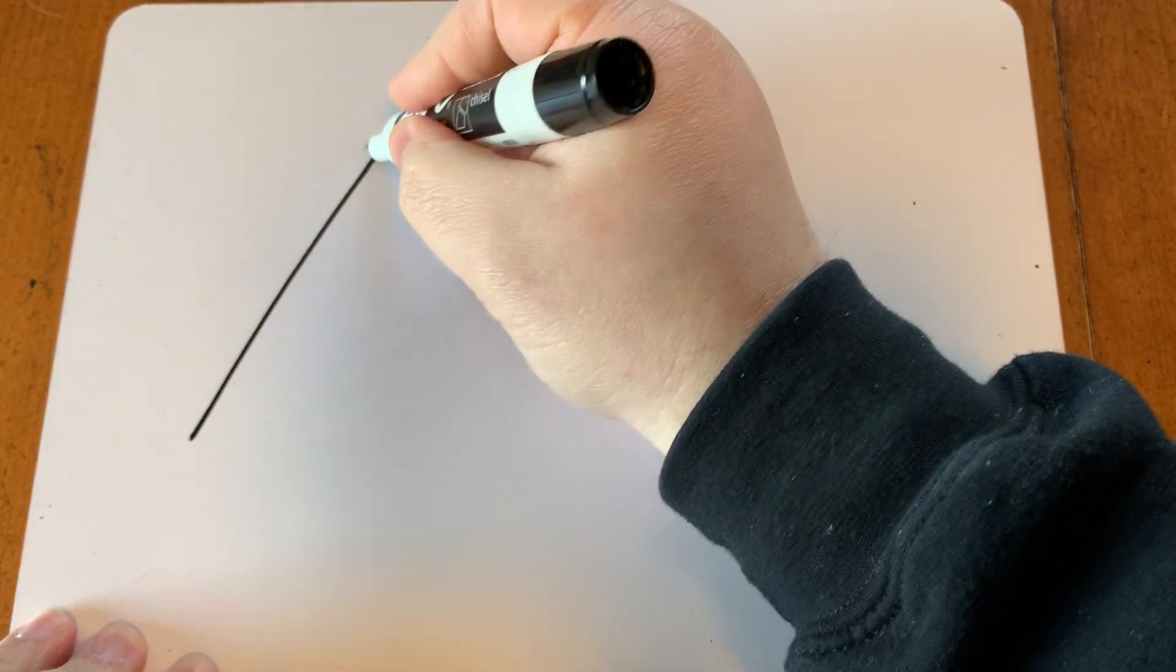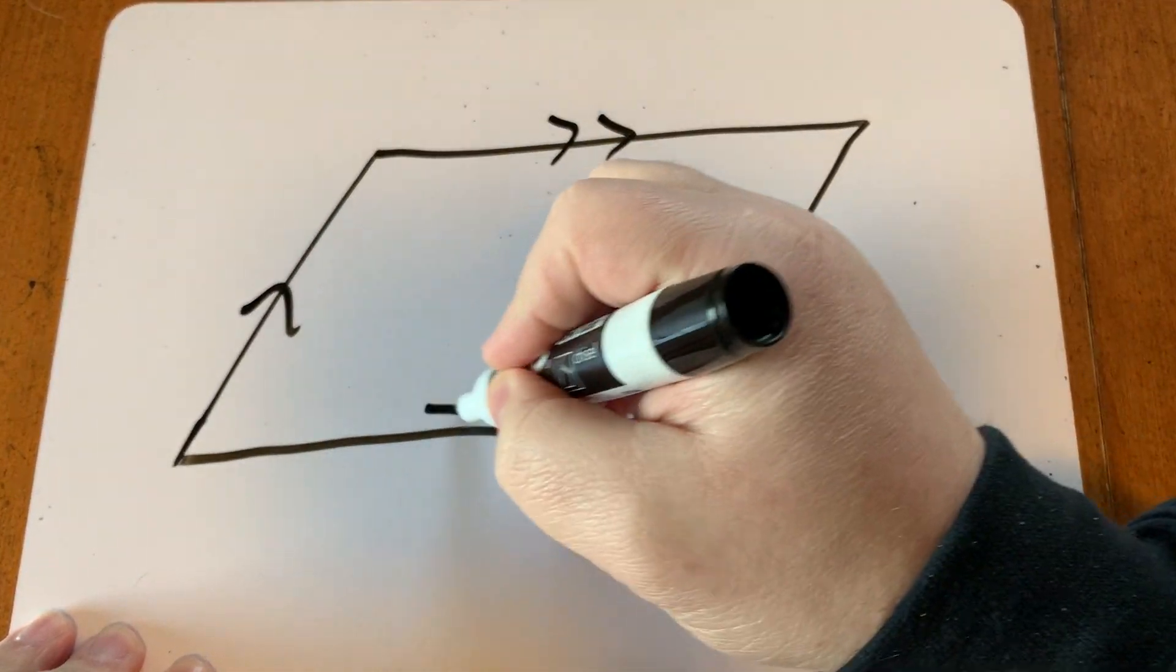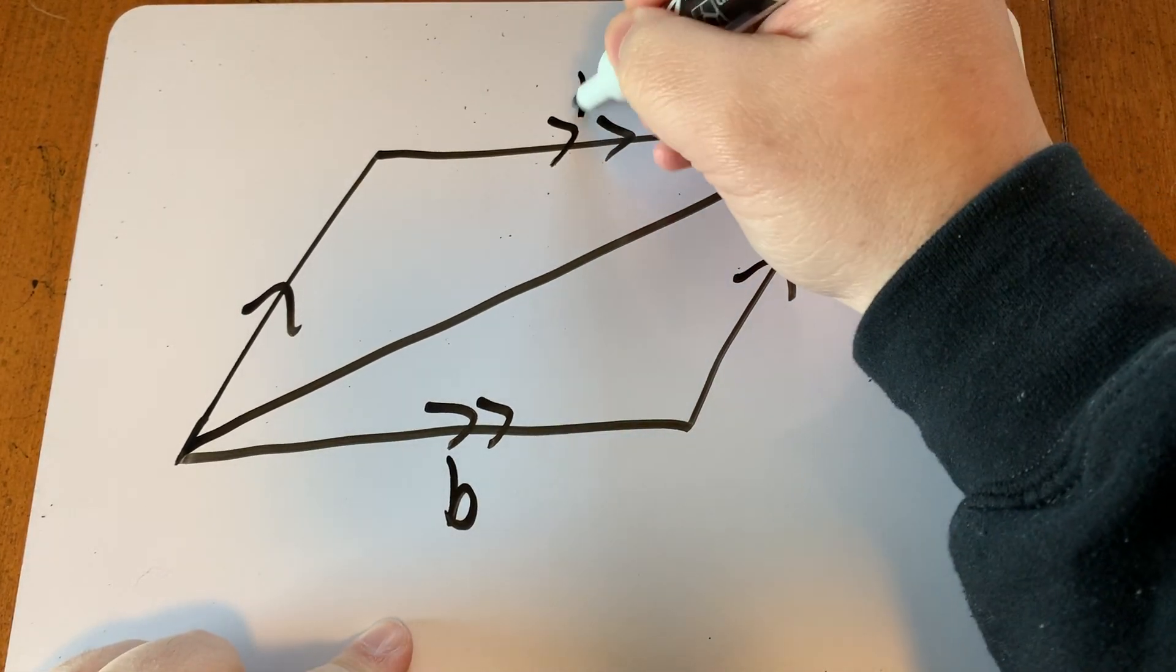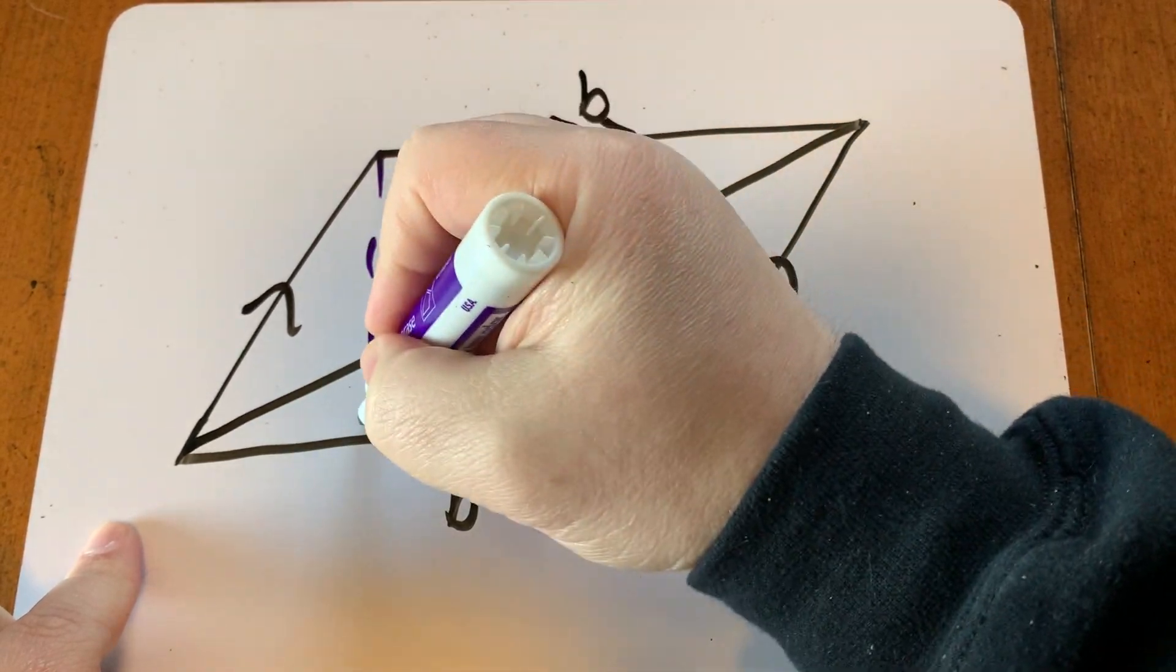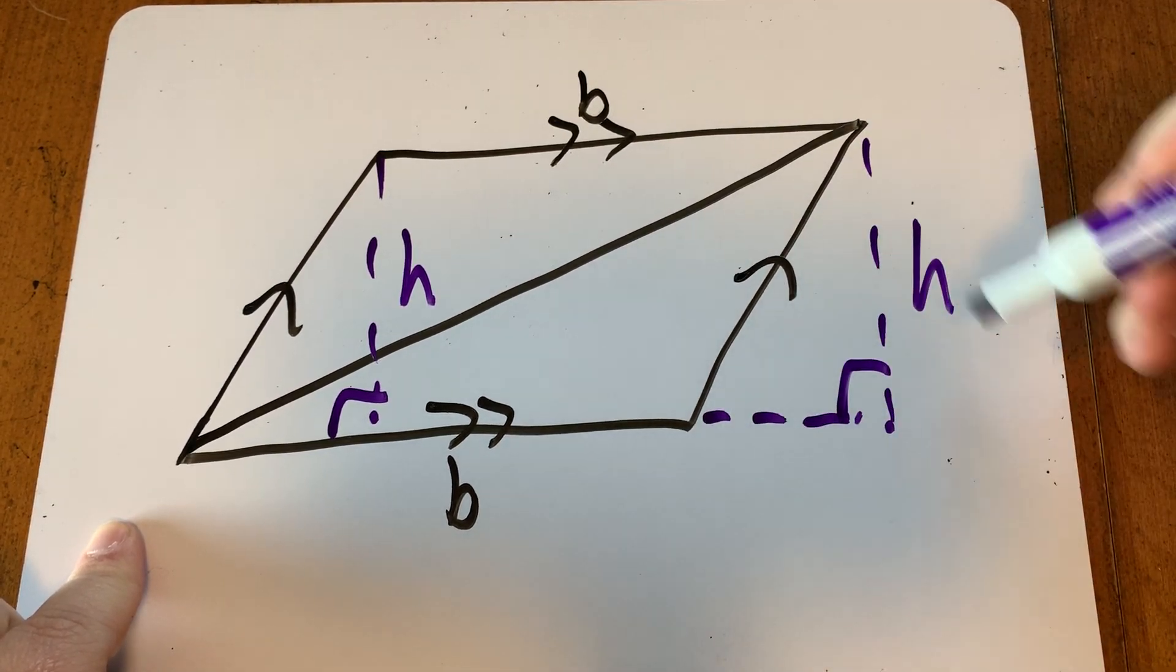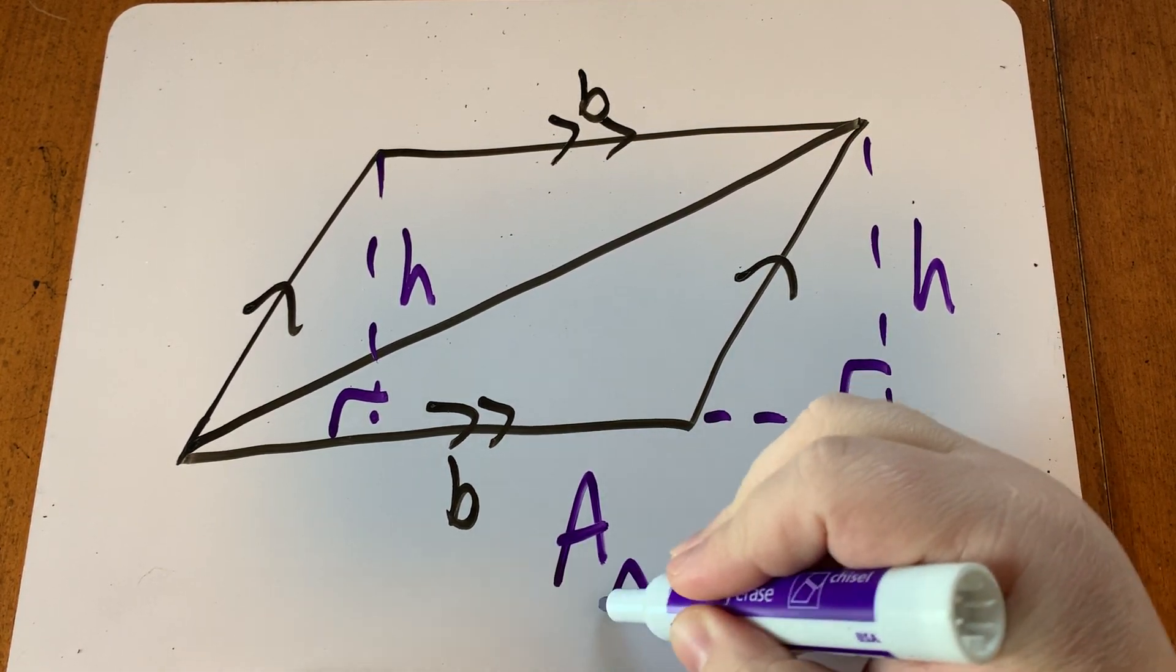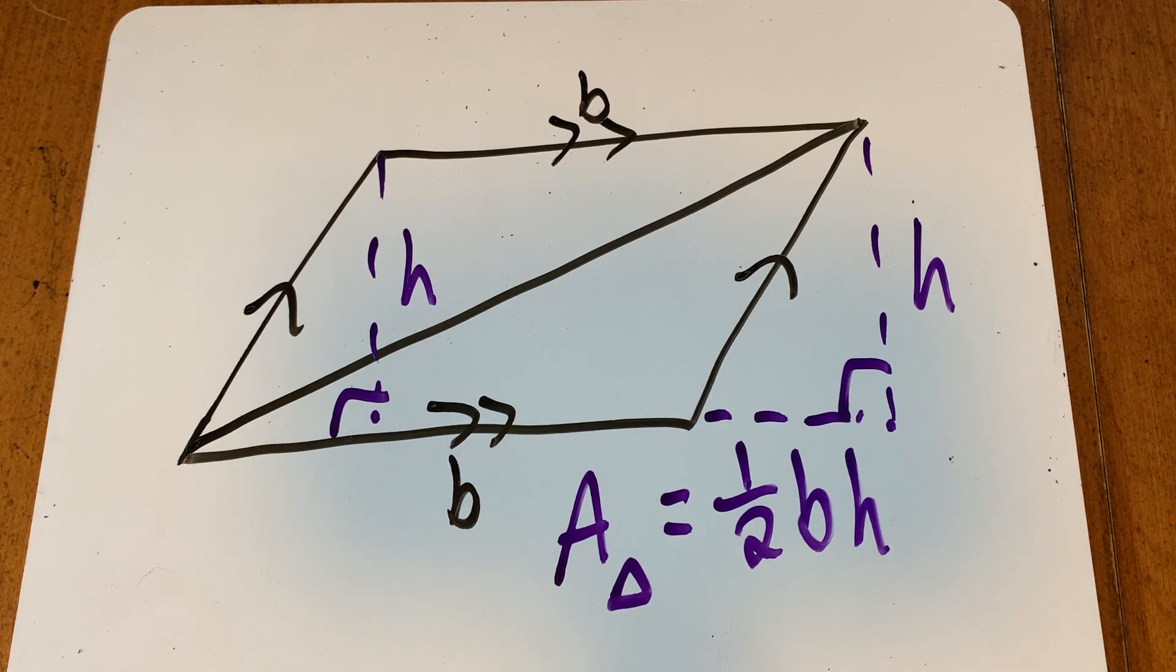Now, if we take a parallelogram again, one of the properties of a parallelogram we learned was that a diagonal divides a parallelogram into two congruent parts. If this is the same b and b again, then this would be the same h. We could even do the h out here because that still would be the distance between these two parallel lines. So the area of the parallelogram is b times h. Well, there's two triangles in the parallelogram. This is why the area of a triangle is one half b times h. I hope that makes sense.